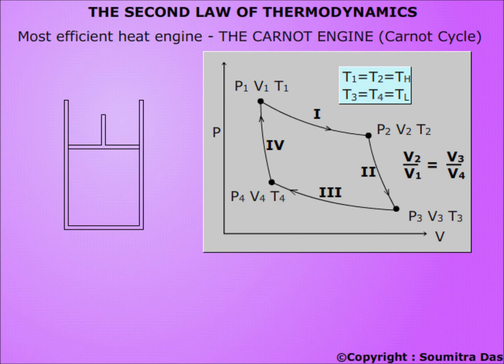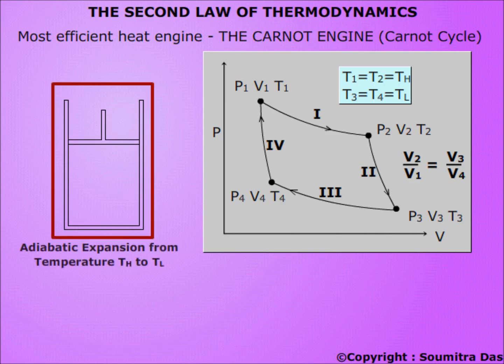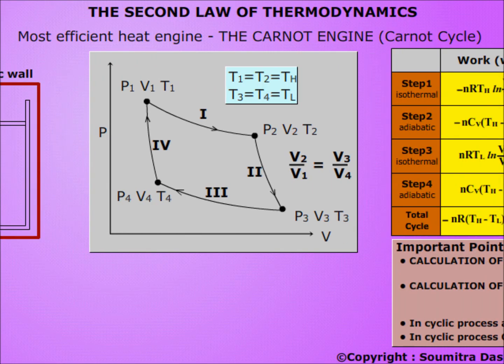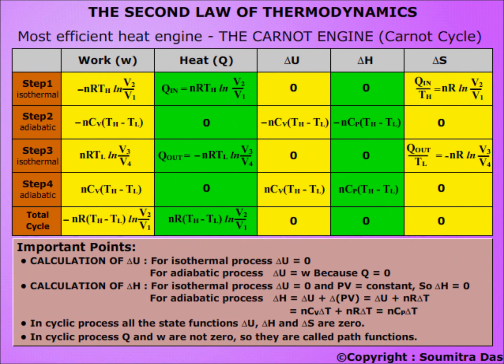Step 2 is adiabatic expansion from TH to TL. The gas undergoes reversible adiabatic expansion, and for this purpose the system is thermally insulated by an adiabatic wall. The work done by the system is W = −nCv(TH − TL), which is negative because work is done by the system.